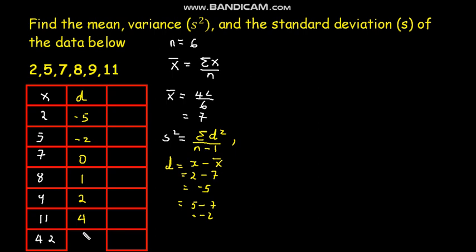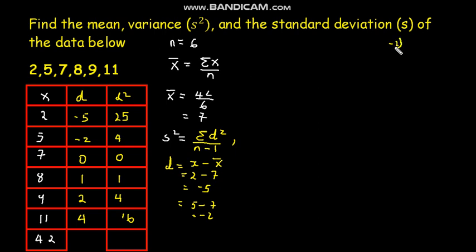Now let us calculate the deviation squared. Negative 5 squared is 25, negative 2 squared is 4, 0 squared is 0, 1 squared is 1, 2 squared is 4, and 4 squared is 16. Note that when we say negative 2 squared, we are squaring everything, which gives a positive 4. Let us now calculate the sum of the squared deviations.